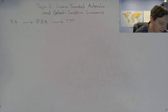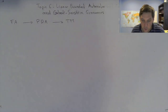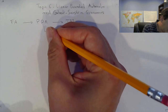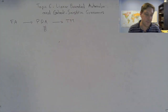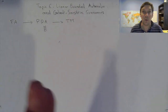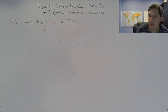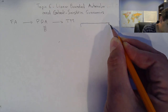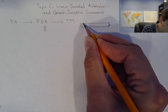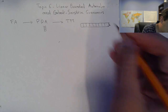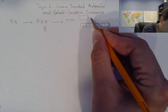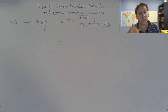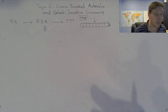In this context, what are we talking about when we talk about linear bounded automata? As a reminder, finite automata don't have a stack. With the PDA, we add a stack — a kind of memory — but which is limited in terms of where you can go and what you can access. And the Turing machine is able to access any location on the tape. We don't call it a stack anymore; we call it a tape.